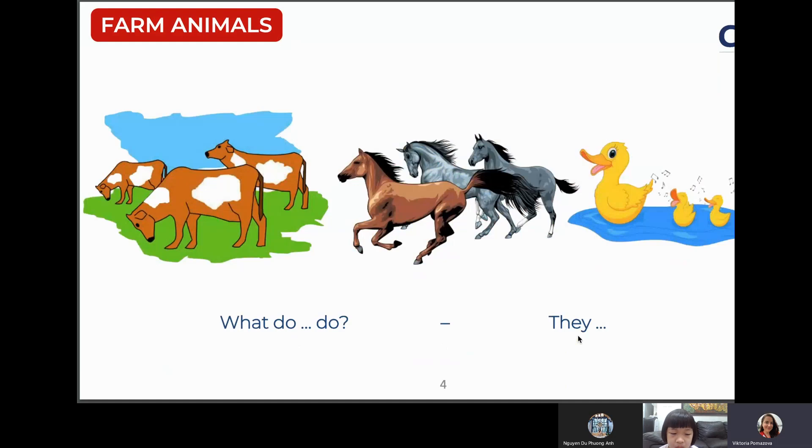All right. And what do they do? What do the cows do? It's brown and white. Yes. And what do they do now? They eat? They eat grass. Yes. Very good.